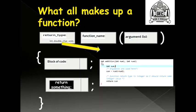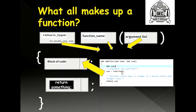Now let's look at the int return type. The return type is int, the function name is 'addition', and the argument list has two parameters: int num1 and int num2. The block of code includes sum equal to num1 plus num2. However, we have a local variable declaration — int sum — and then you are returning sum. You will have to put a semicolon there.